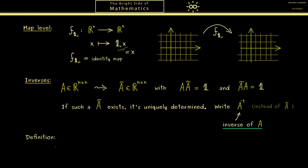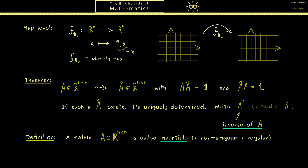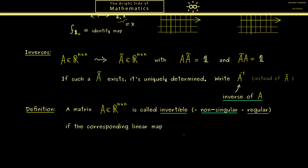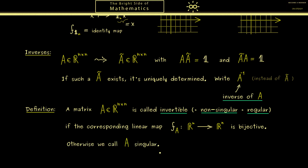We call a square matrix A an invertible matrix if such an inverse matrix exists. Moreover there are also other equivalent names: one says the matrix is non-singular or one says the matrix is regular. In the end all these terms mean the same thing — namely that the matrix has an inverse. On the map level this invertibility just means that we have a bijective map. If this map is not bijective we call the matrix A singular; most common is the term singular.